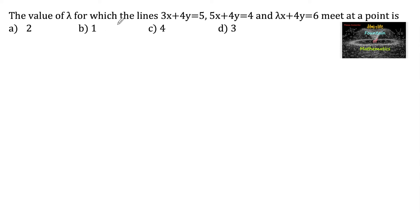The value of lambda for which the lines 3x plus 4y equals 5, 5x plus 4y equals 4 or minus 4 equals 0, and lambda x plus 4y minus 6 equals 0 meet at a point, which means that all these three lines are concurrent.